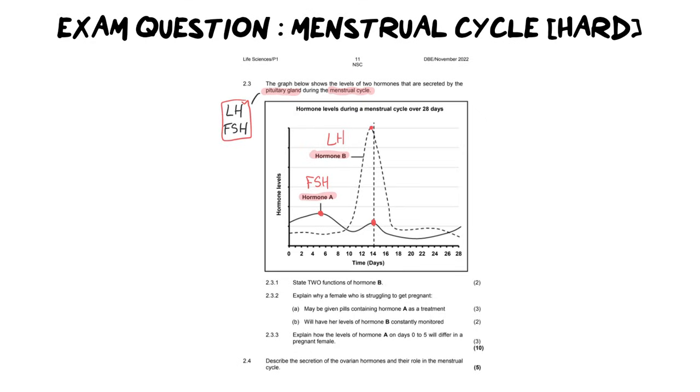And LH peaks just before or on day 14. And that is because of its function. LH causes ovulation. So again, we not only need to know where these hormones are made, but we need to know how to read them off a graph depending on where they peak during the menstrual cycle. So I've now identified who they are. Let's go into the questions and see what we need to do with it.